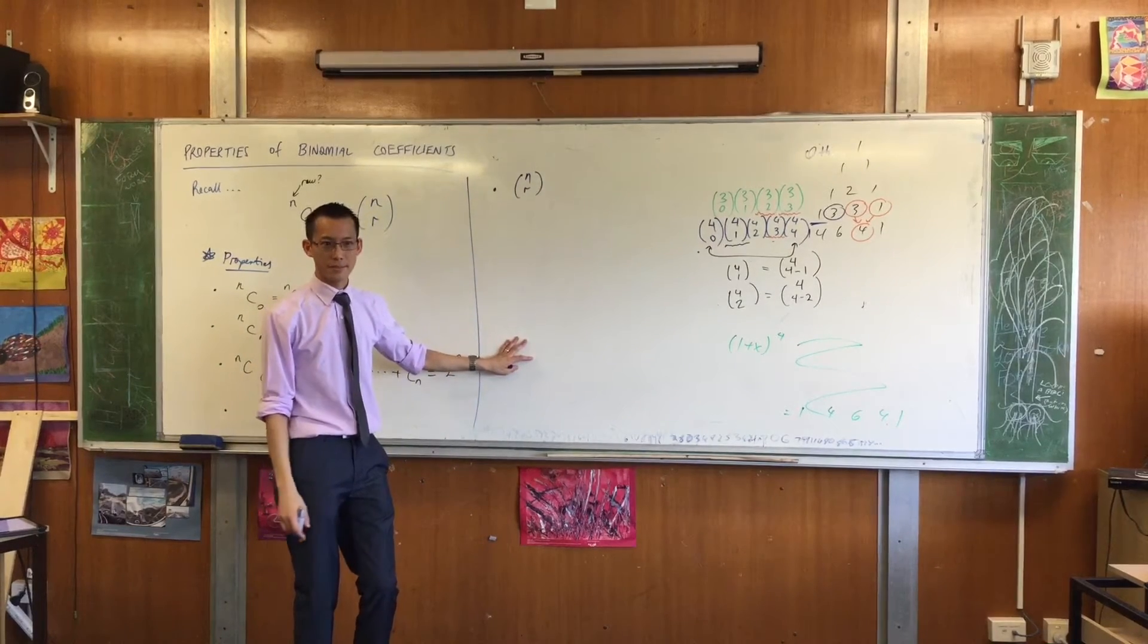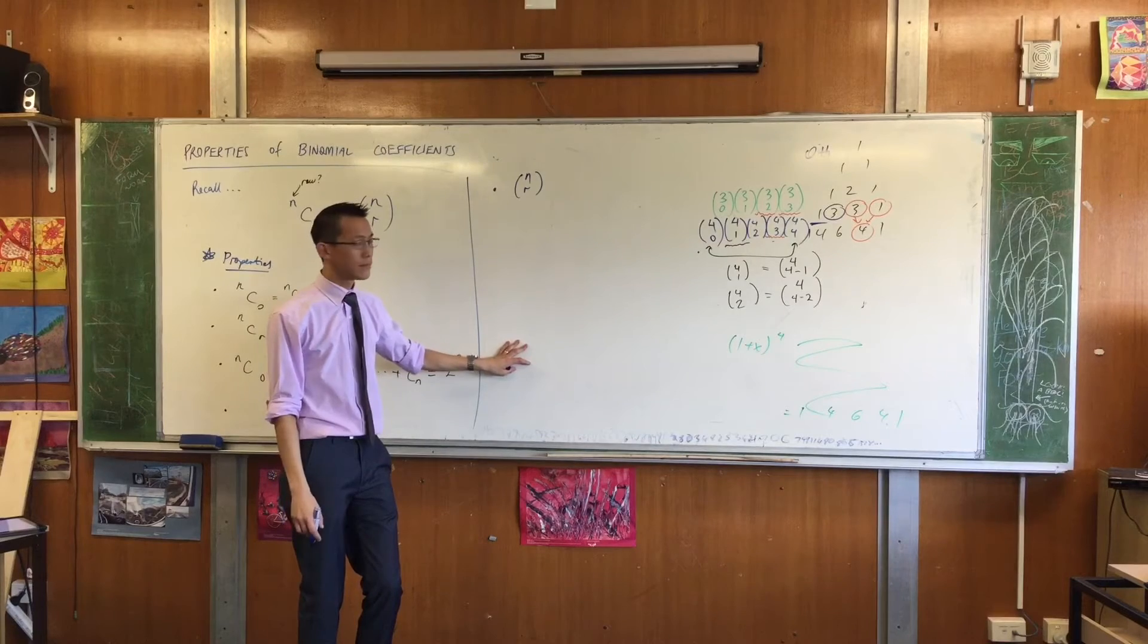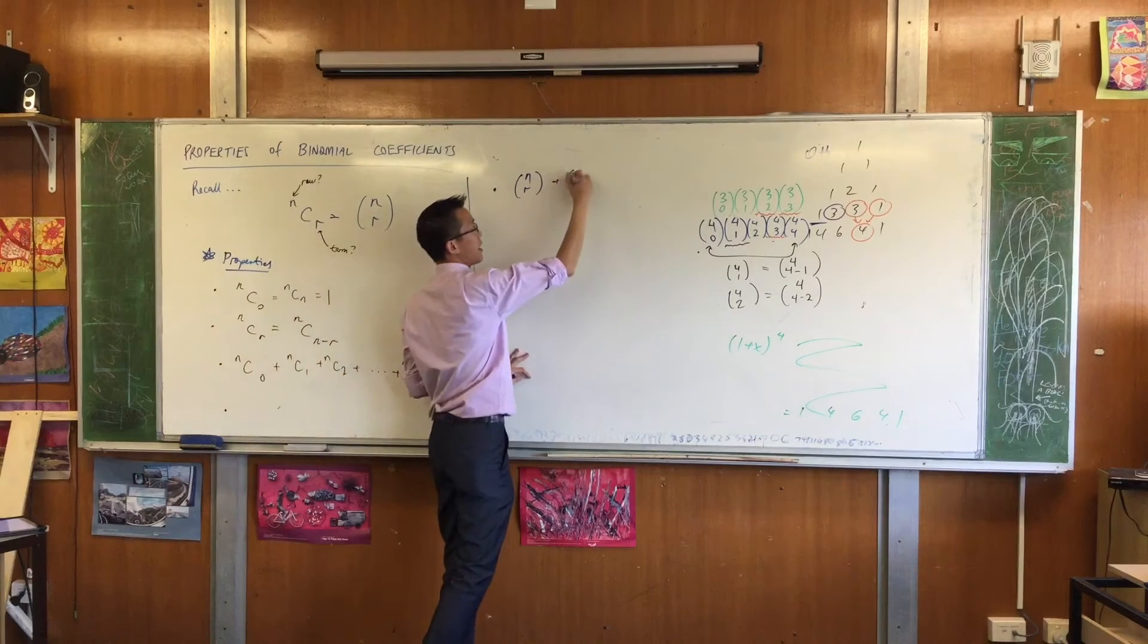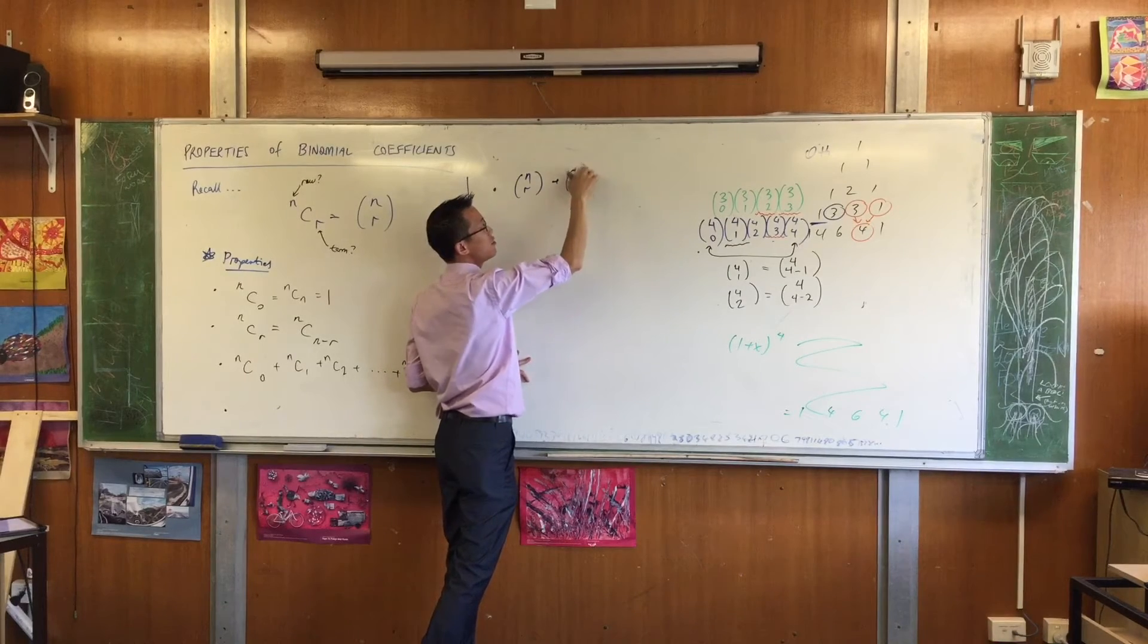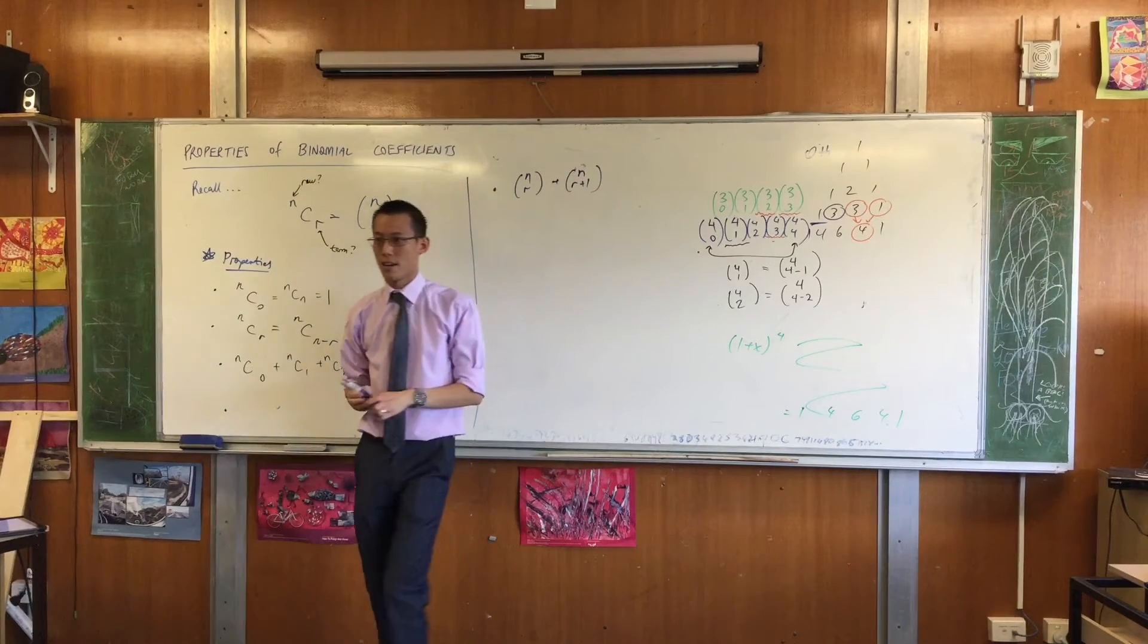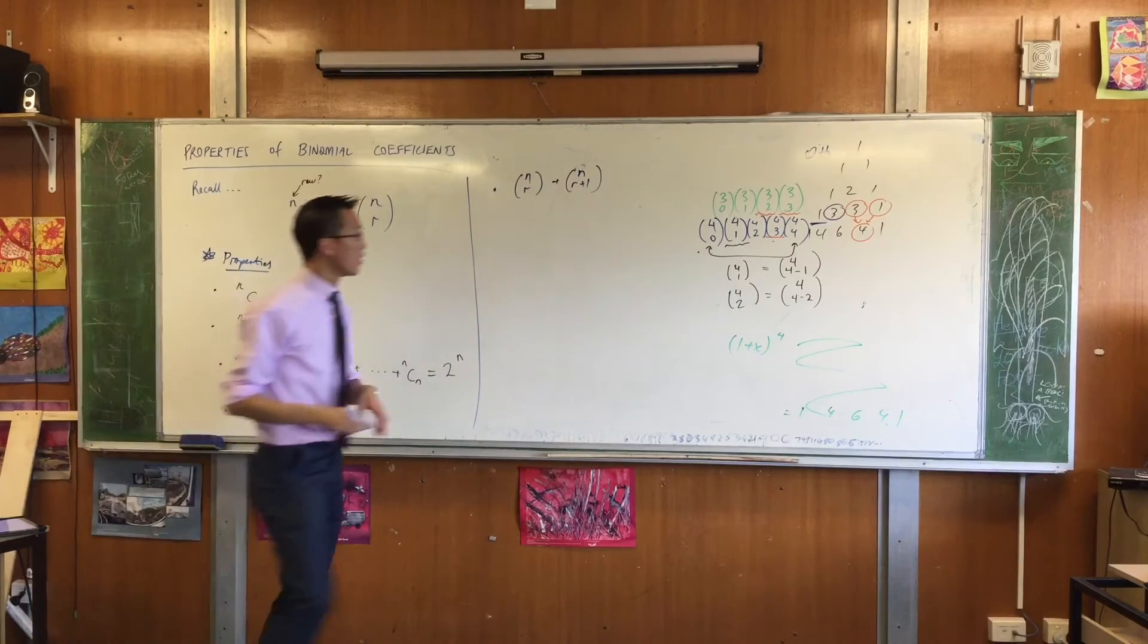Then what is the term next to it? It's going to be NCR plus 1. I'm still in the same row but I've gone one term along, do you agree? Yeah, okay.